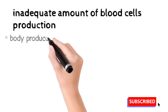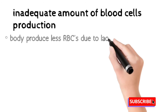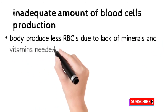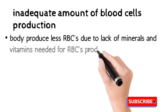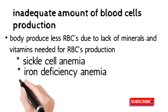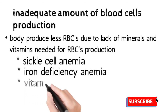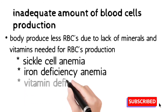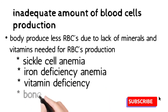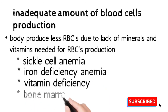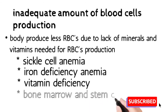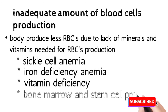The second type on the basis of causes is inadequate production of blood cells. The body produces less RBCs due to lack of minerals and vitamins required for RBC production. This includes sickle cell anemia, iron deficiency anemia, vitamin deficiency anemia, bone marrow dysfunctions, and improper stem cell functioning — all conditions during which an inadequate amount of RBCs is produced.